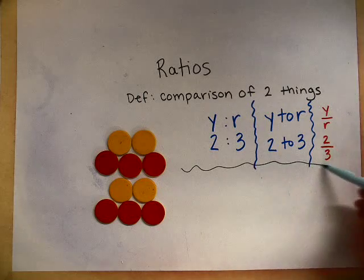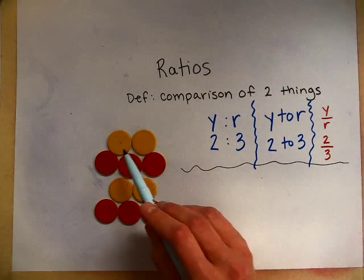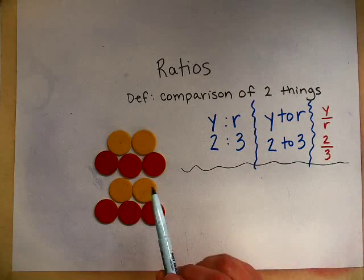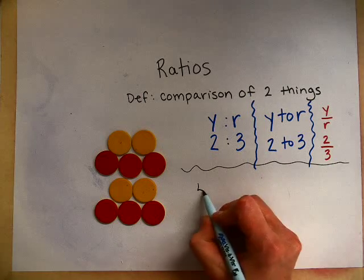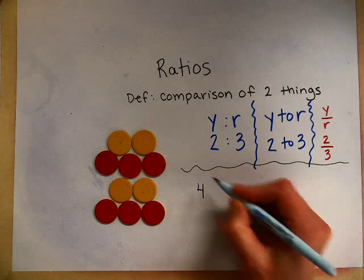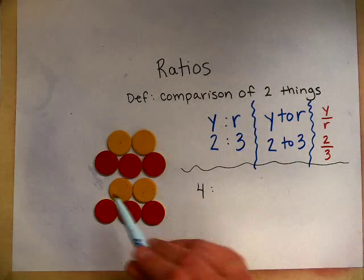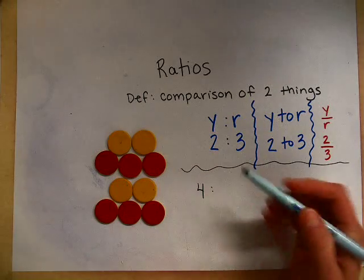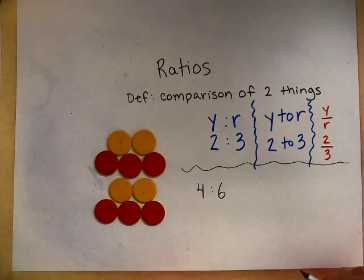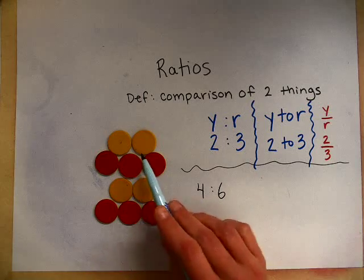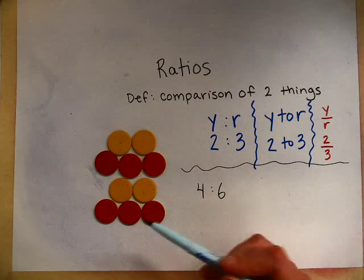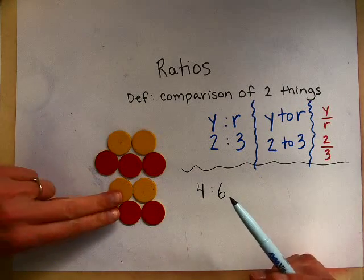So now your ratio becomes four yellow to six red. You basically multiplied it by two. There's one set and there's a second set.